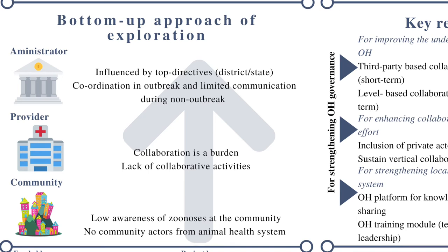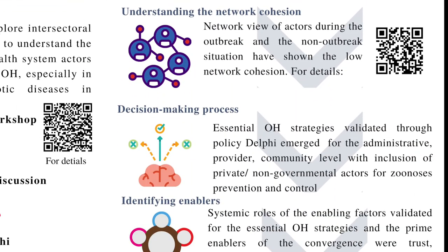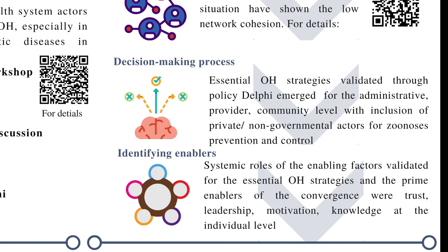As collaboration is the key in One Health, I developed a five-step process for exploring the collaboration process. First, prioritizing the goals — either disease control or risk mitigation. Second, identifying all potential and relevant actors such as stakeholders and institutions responsible for the prioritized goals. Third, understanding the current network cohesion among identified actors as well as their interest in the newly prioritized goal and influence on other actors. Fourth, the decision-making process on key strategies for operationalization. And fifth, identifying the enabling and barrier factors within the network of operationalization.